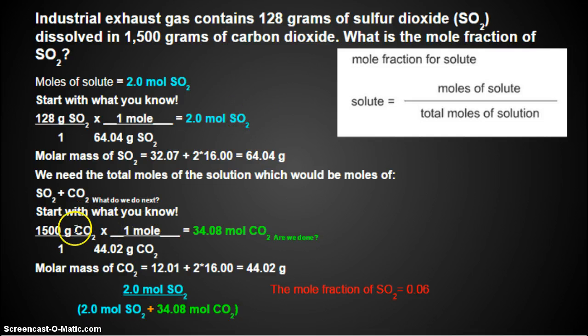Then we had to find moles of CO2. We start with what we know, which was 1,500 grams, divided by the molar mass, which we found on our periodic table, to convert that into moles. Then we plug everything in our equation. The moles of solute divided by our total moles. So the moles of solute plus moles of solvent. And that's it. So yeah, there are a lot of steps, but this is one of those examples where you just take it one at a time.